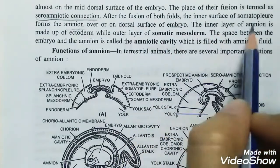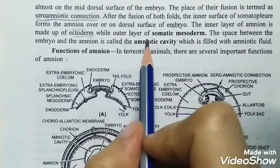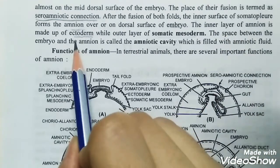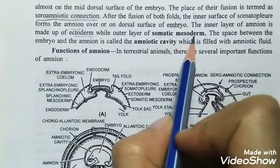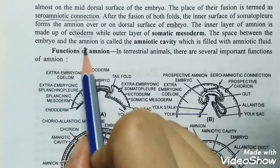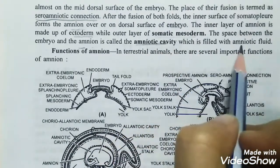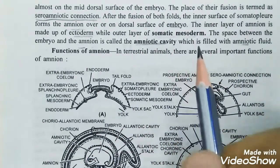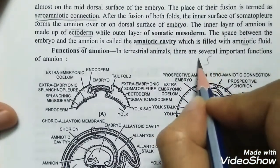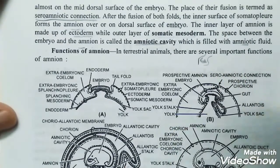The inner layer of amnion is called ectoderm. The outer layer of amnion is called somatic mesoderm. The space enclosed is called the amniotic cavity, which is filled with amniotic fluid. This membrane is called the amniotic membrane.